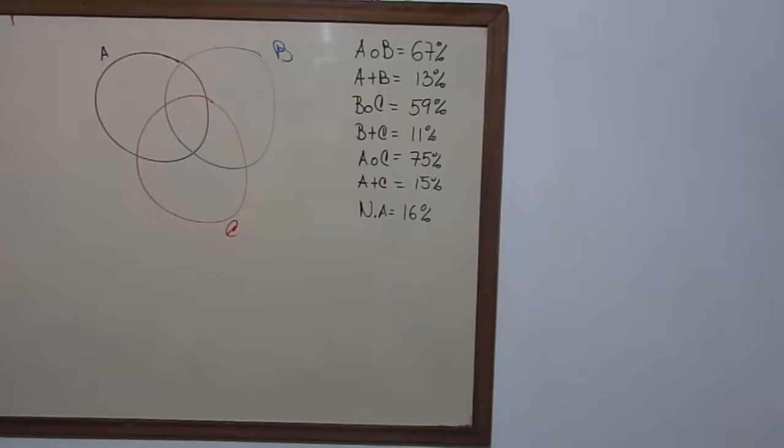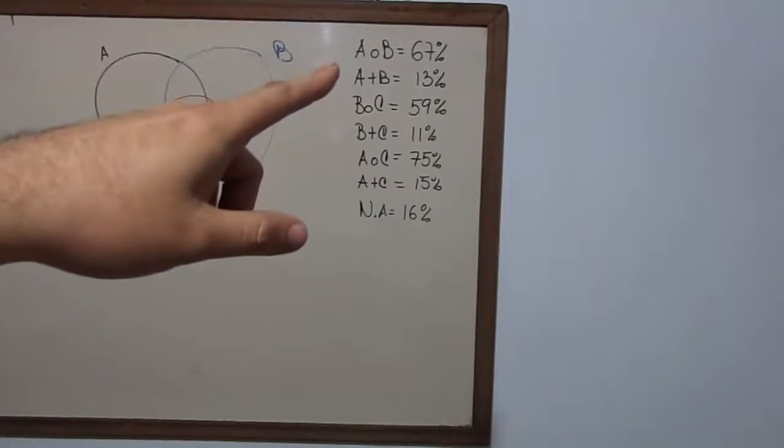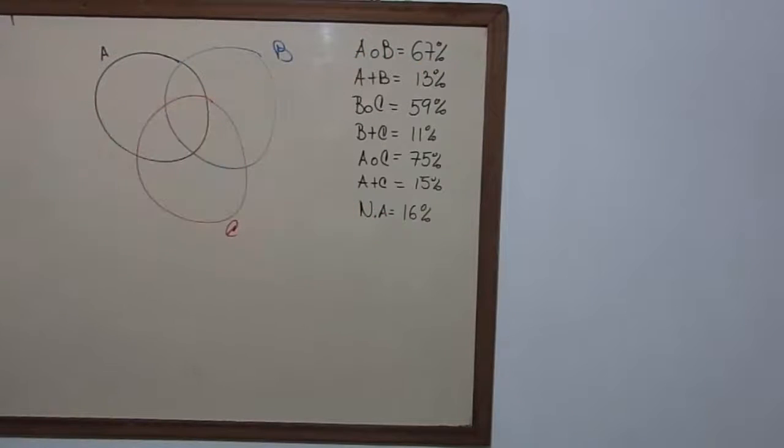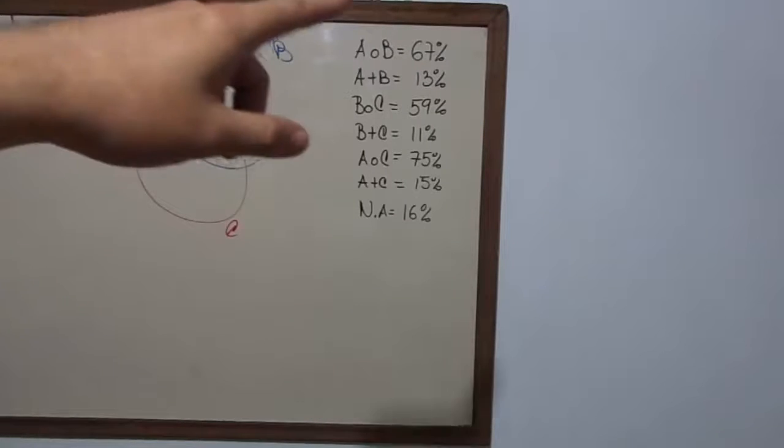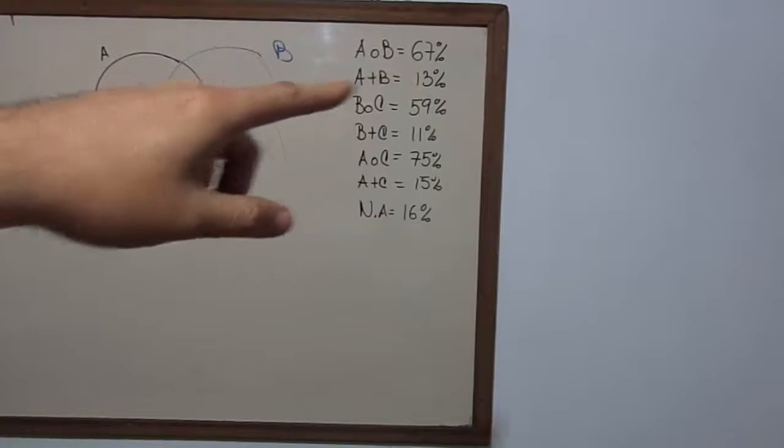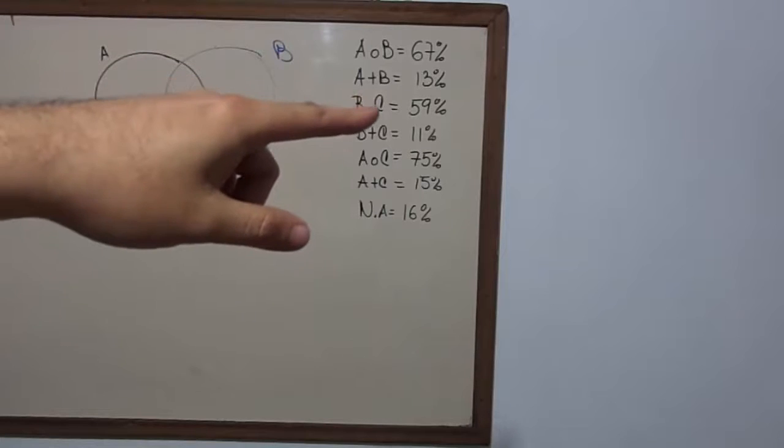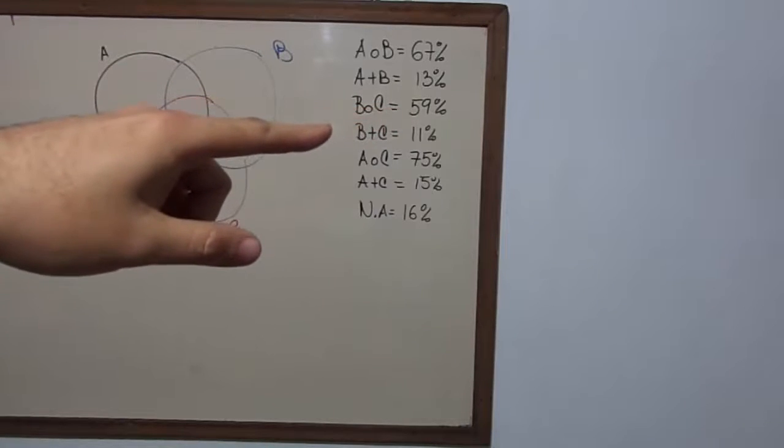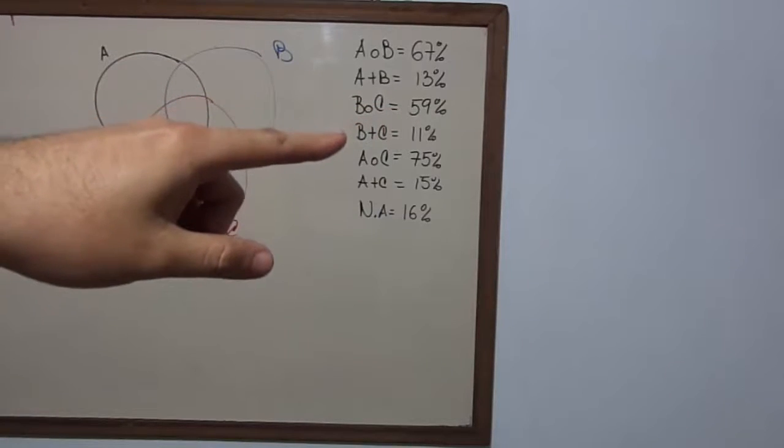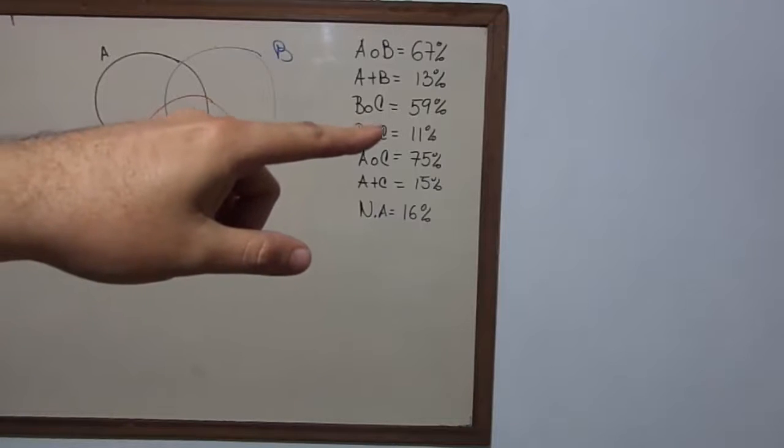Some people said that they drink either A or B and those were 67%. Those who said that were drinking A and B said they were 13%. People that said that drank either B or C were 59%. And the people who like both drinks, I mean B and C,